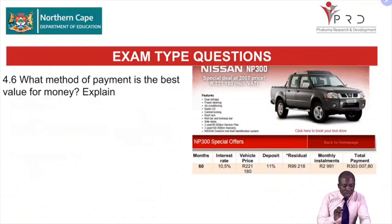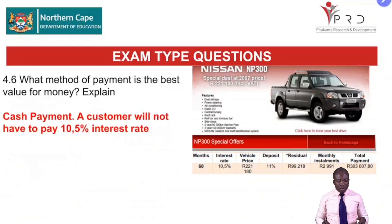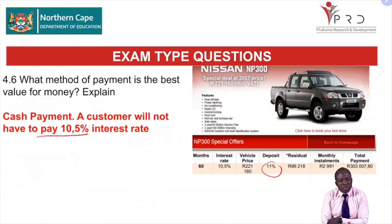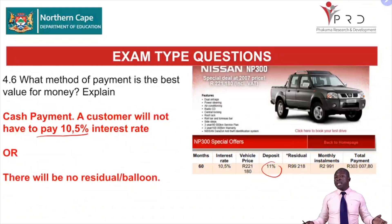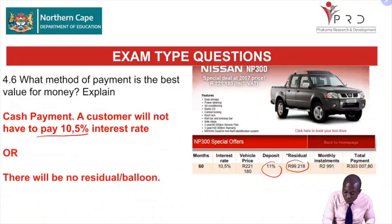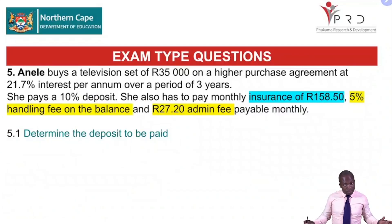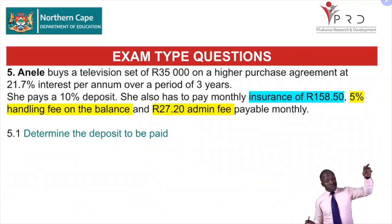Question 4.6 — what method of payment is the best value for money: cash or installment? With cash payment, a customer will not have to pay the 11% deposit, and there will not be any residual balloon payment. If you had cash, you don't pay the deposit or the residual — so cash is clearly the better value for money.